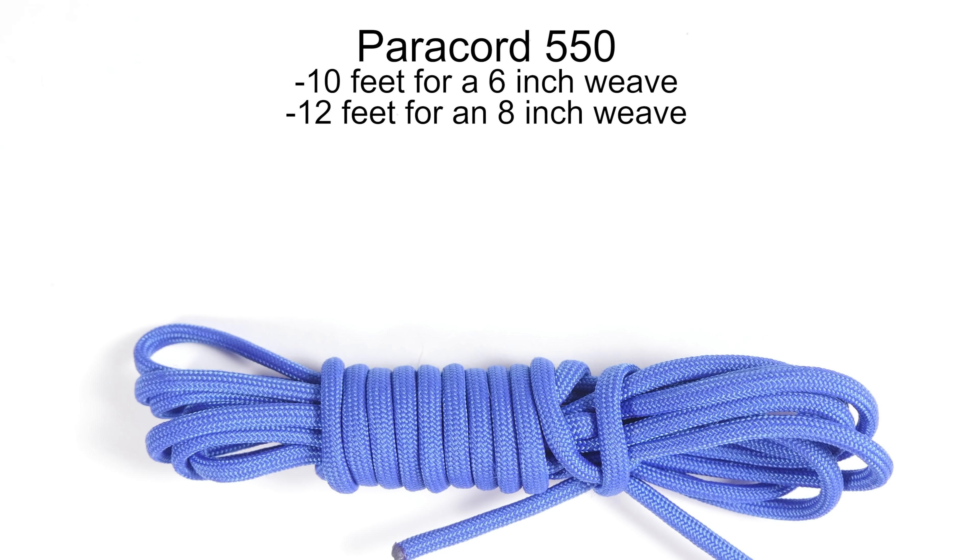The weaving process is very simple. We're going to alternate between the left end and the right end. We take the left end, over three, in between the third and fourth cord, and back to the left side.